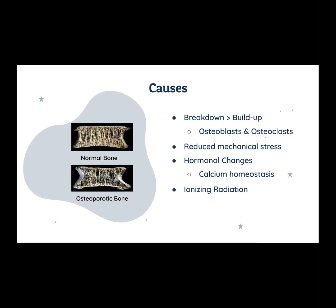Different hormones and environmental factors also play a role in how these cells are working, and going into space has systemic effects that can heighten osteoclast activity. For example, decreases in mechanical stress change how osteoblasts and osteoclasts function. Hormone imbalances also regulate the osteoclast pathway — calcium homeostasis regulated by the pituitary gland affects bone health. Finally, ionizing radiation can affect gene transcription and cells overall, which can impact how those cells are working.